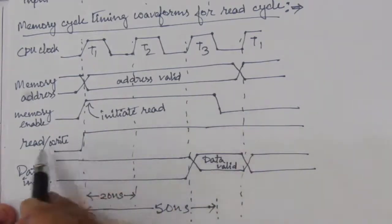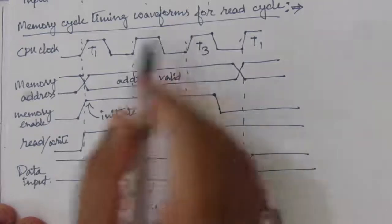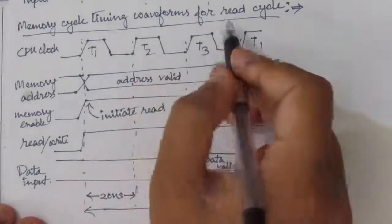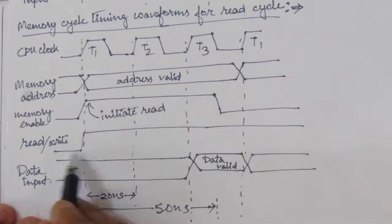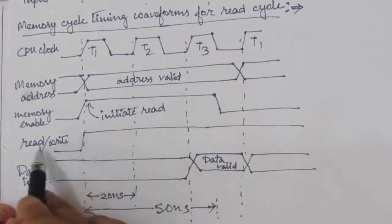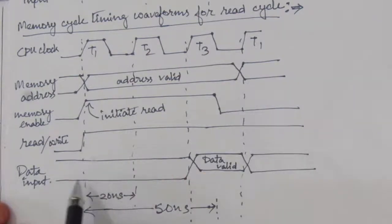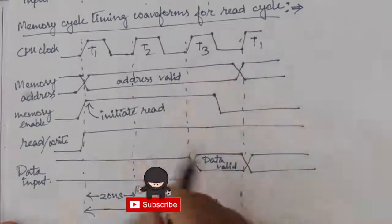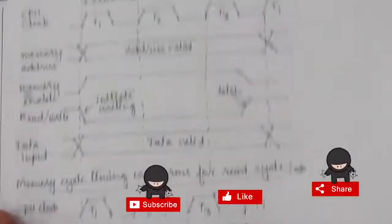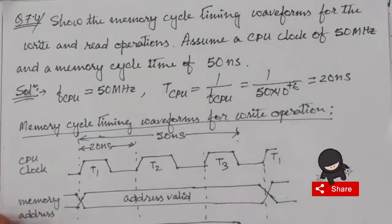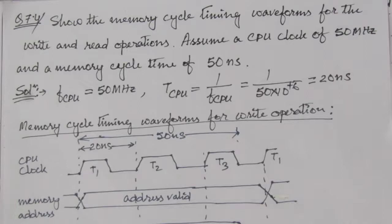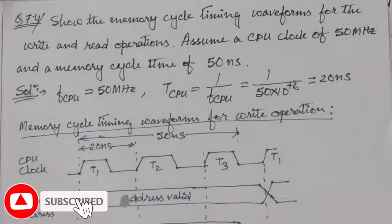For the read operation we keep the read/write signal high. Then we have the data input, which will have a valid data output. This is the solution of problem number 7.4. Thank you for watching — if you have any questions please put them in the comment section below, and also like, share, and subscribe to my channel.